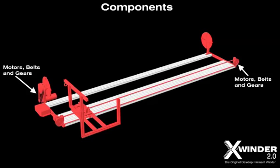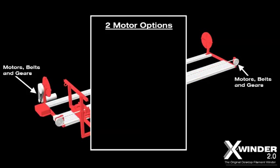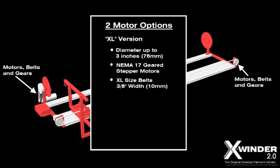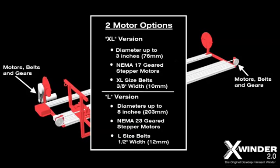Since larger mandrels require more motor torque, there are two motor size options available. The X-Winder 2 XL version ships with NEMA 17 geared stepper motors and can handle mandrels up to 3 inches in width. The X-Winder 2 L version ships with the larger NEMA 23 geared stepper motors and can handle mandrels up to 8 inches in width.